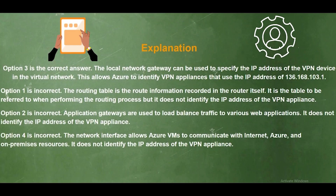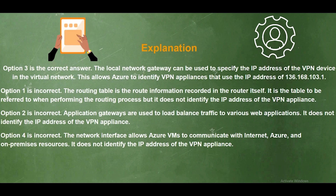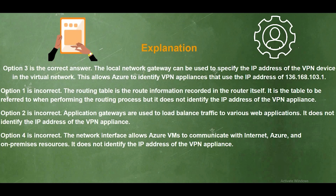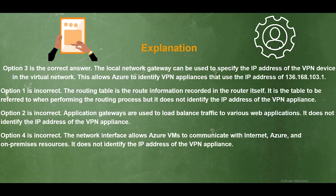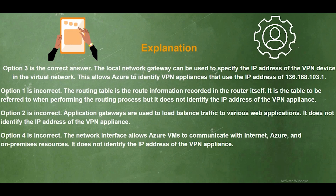Option three is the correct answer. The local network gateway can be used to specify the IP address of the VPN device in the virtual network, allowing Azure to identify the VPN appliance using IP address 136.168.103.1. Option 1 is incorrect — the routing table records route information for routing processes but does not identify a VPN appliance's IP address. Option 2 is incorrect — application gateways load balance traffic to web applications and do not identify VPN appliances. Option 4 is incorrect — the network interface allows Azure VMs to communicate with the internet, Azure, and on-premises resources, but does not identify the VPN appliance's IP address.